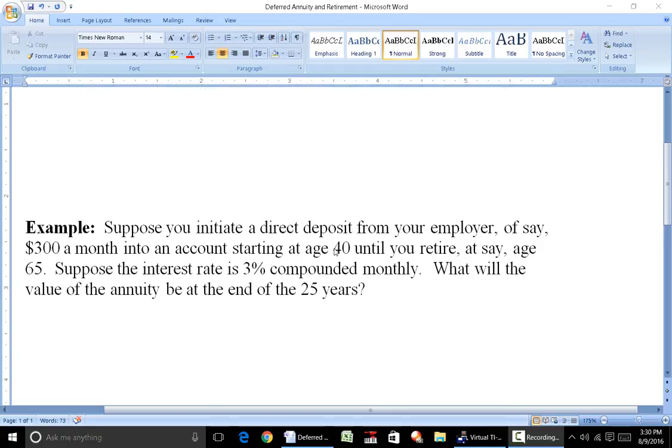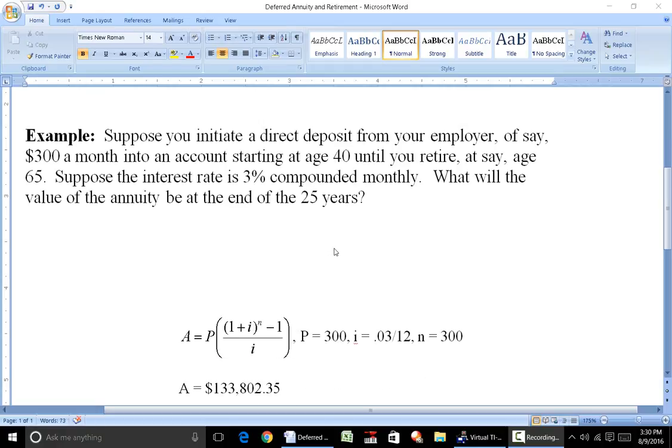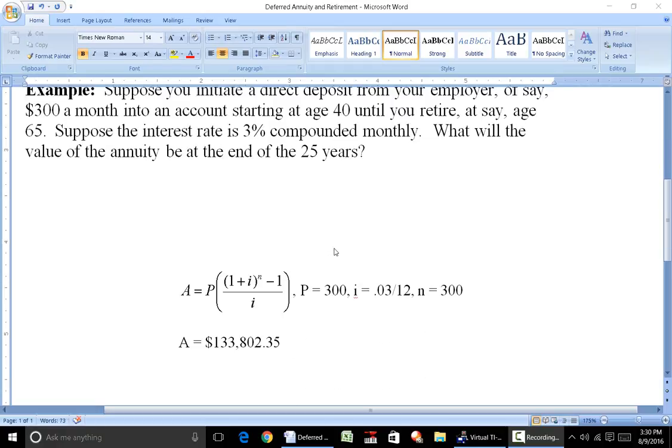So I'm going to do it two ways. One way is just basically use your formula. So A here is equal to P, and then you have parentheses 1 plus I to the nth minus 1, all divided by I. P here is the payment that you'll make monthly. So in this case, it's going to be, say, $300.